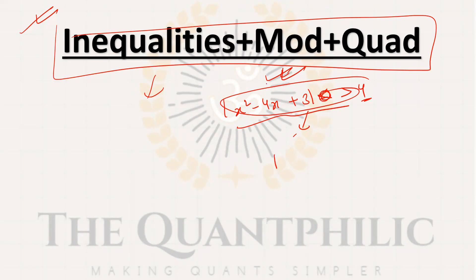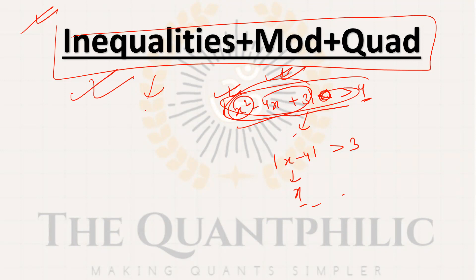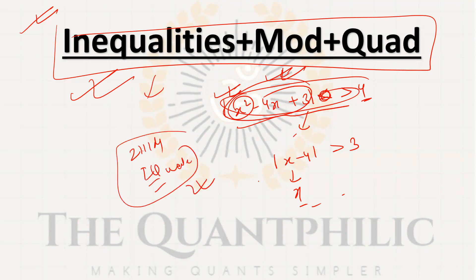If you don't want to tackle the quadratic part, you can deal with simpler forms — like |x-4| > 3, find the range of x. You should practice plenty of questions from whatever source you can: IIM, IQuanta, everyone has CAT/MBA resources on their website. You can go for those.